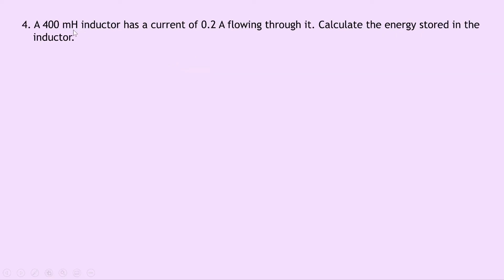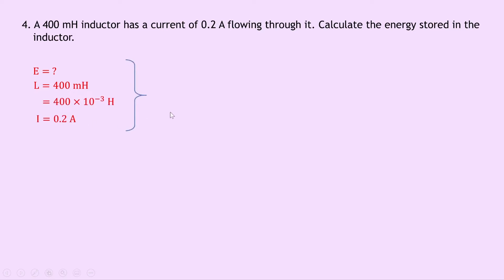Question 4 says that a 400 millihenry inductor has a current of 0.2 Amps flowing through it. Calculate the energy stored in the inductor. We know inductance L is 400 millihenry, which is 400 times 10 to the minus 3 Henrys, and current I is 0.2 Amps. Writing down our equation for energy stored: E equals a half LI squared. Substituting in gives a half times 400 times 10 to the minus 3 times 0.2 squared. Don't forget to square that term, and you should get an answer of 8 times 10 to the minus 3 joules.